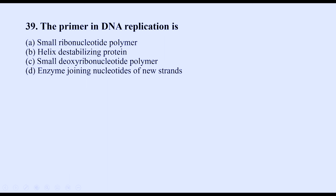Regarding the primer in DNA replication — option D (enzyme joining nucleotides of new strands) refers to ligase. Option B (small deoxyribonucleotide polymer) is wrong because the primer is made of RNA nucleotides, not DNA. Option C (helix destabilizing protein) refers to helicase, which unwinds the helix. Option A — small ribonucleotide polymer — is correct, since a primer is an RNA nucleotide polymer. The correct option is A.